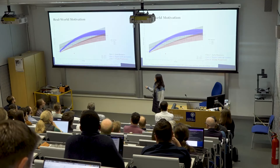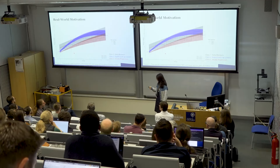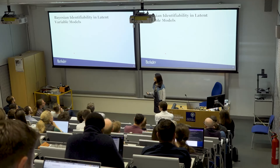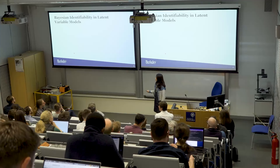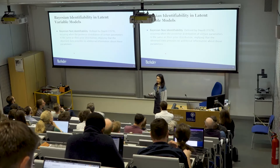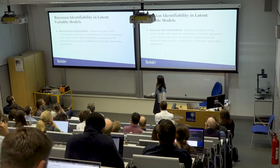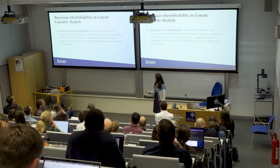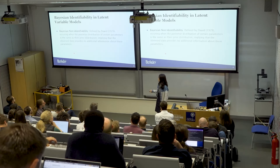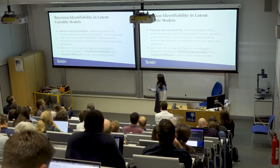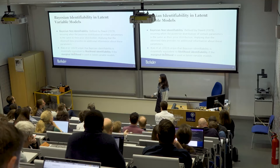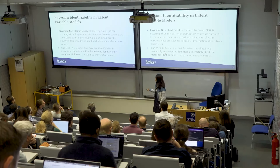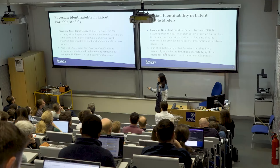What is Bayesian identifiability? The definition: the data or likelihood provides nothing, so the posterior distribution is the same as the prior distribution. For latent variable models or hierarchical models, we argue that Bayesian identifiability is equivalent to likelihood identifiability if the marginal likelihood is used.